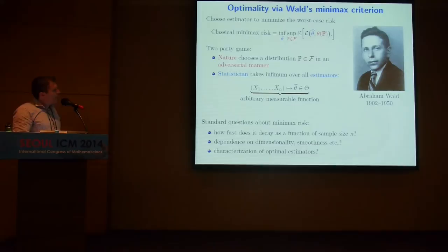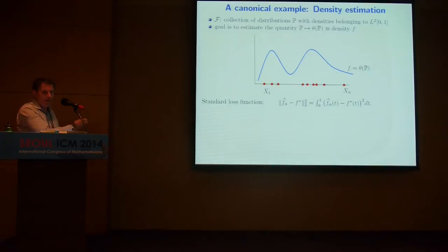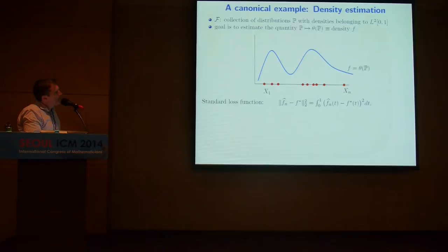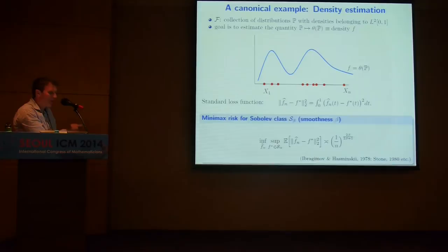Let me give a canonical example before moving on. In density estimation, you're looking at distributions that have some density belonging to L2. The functional you'd like to estimate is the density itself. A standard loss function would be the L2 norm — integrated squared error. You have a density, you're getting samples drawn according to it, and you'd like to use those samples to estimate the density. This is a classical example — the minimax rates are well known.